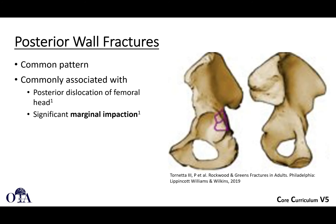Posterior wall fractures are very common. You're going to see these; they are commonly associated with a posterior dislocation of the femoral head. Sometimes you can have a phenomenon called marginal impaction. On the AP x-ray, sometimes there's posterior dislocation of the femoral head, and the posterior wall may appear as a second line — you'll have your sourcil and then this other line floating like a cap on the dislocated head.